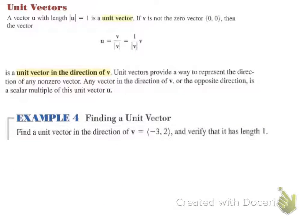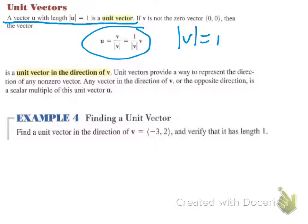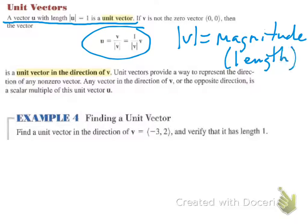Unit vectors — this is important. If a vector has a length of one, it's called a unit vector. Here is the formula: u = (1/|v|) · v, where |v| means magnitude. So it's a unit vector in the direction of v. Unit vectors provide a way to represent the direction of any non-zero vector, and all unit vectors have a length of one.